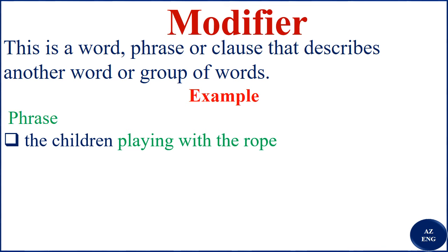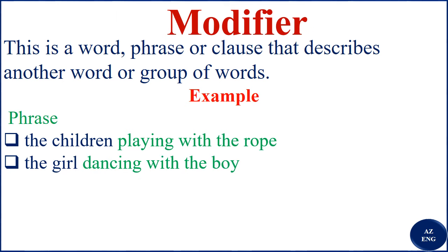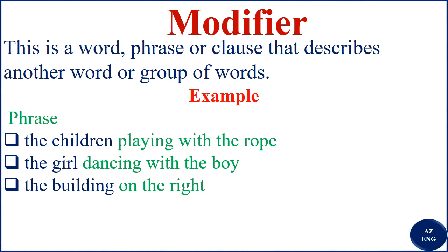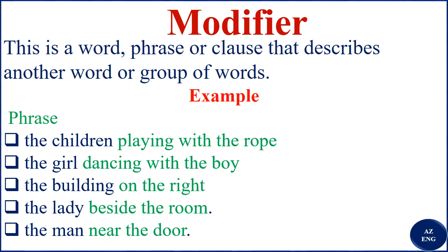'The children playing with the rope' — 'playing with the rope' modifies 'children'; it tells you which children. 'The girl dancing with the boy' — 'dancing with the boy' describes and modifies 'girl.' 'The building on the right' — 'on the right' modifies 'building.' 'The lady beside the room' — 'beside the room' modifies 'lady.' 'The man near the door' — 'near the door' modifies 'man.' All of them are phrases acting as modifiers.